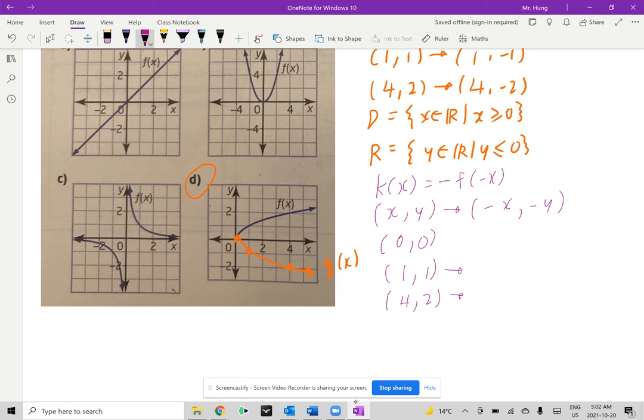The major difference here is you're going to take the negative of the x components. So it's going to be 0, -1, -4. And if I take the negative of the y components, that's going to be 0, -1, and -2.